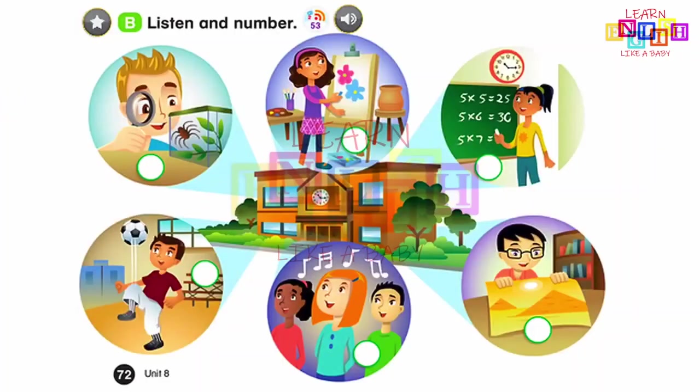Page 72, B: Listen and number. One: Look at this spider, I like science. Two: Look at these, they're old, I like social studies. Three: I'm drawing, I like art. Four: Three times five, that's right, I like math. Five: I have a soccer ball, I like P.E. Six: I'm singing, I like music.